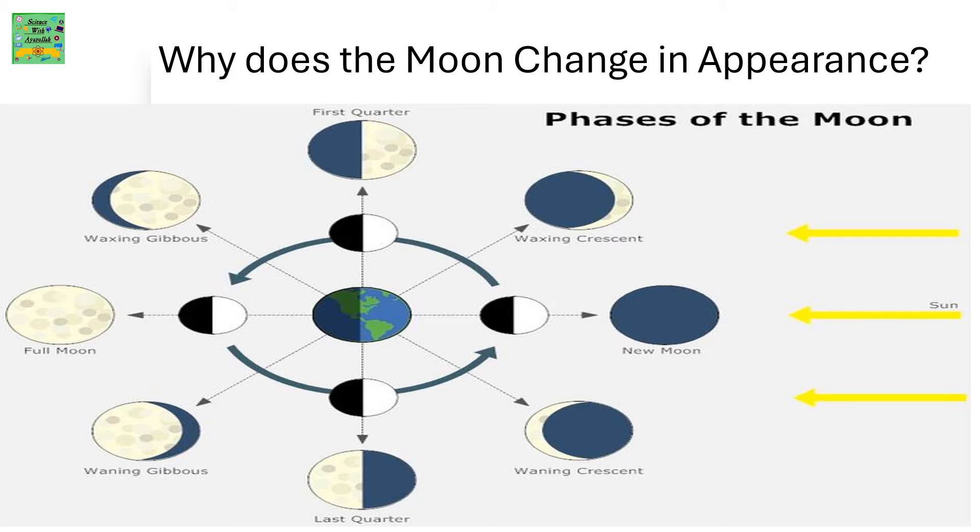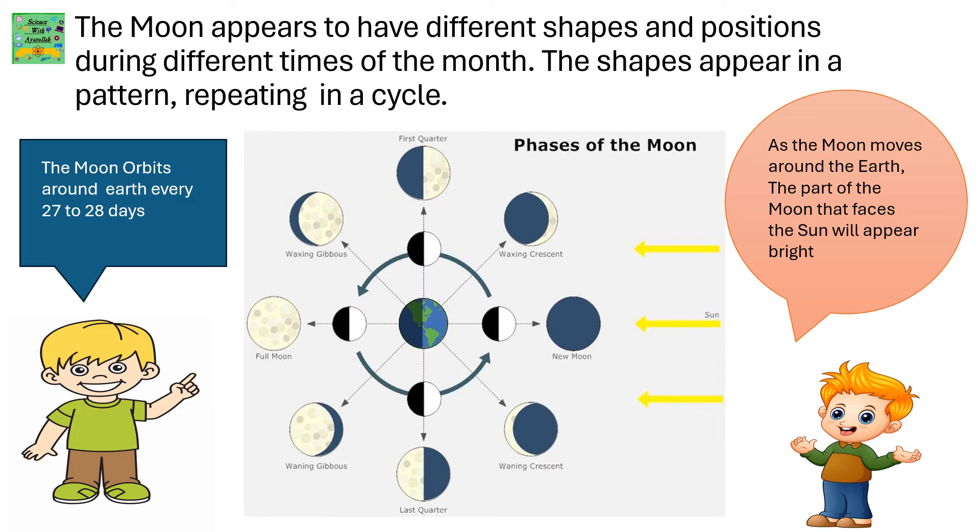Why does the moon change in appearance, the phases of the moon? The moon appears to have different shapes and positions during different times of the month.